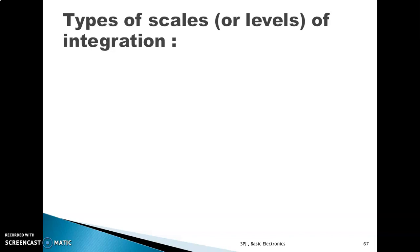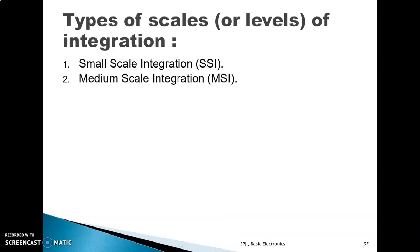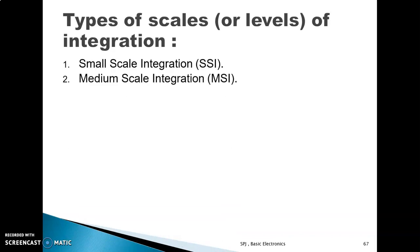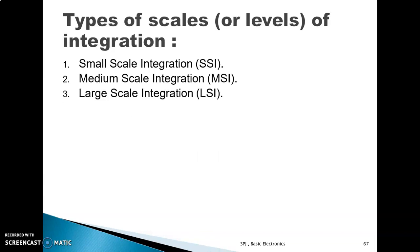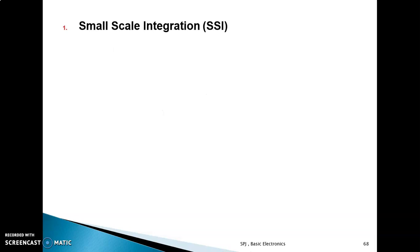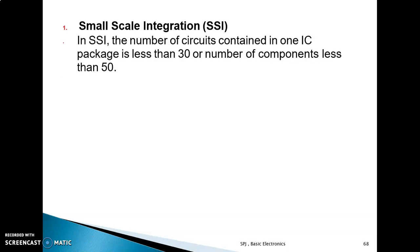The types of scale or levels of integration are: first, Small Scale Integration (SSI), then Medium Scale Integration (MSI), Large Scale Integration (LSI), and Very Large Scale Integration (VLSI). In SSI, the number of circuits contained in one IC package is less than 30, and the number of components is less than 50.